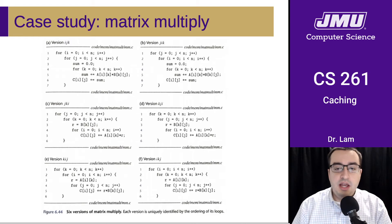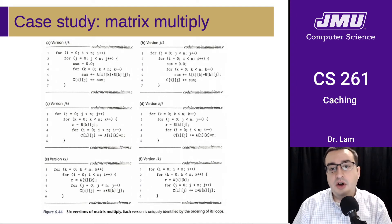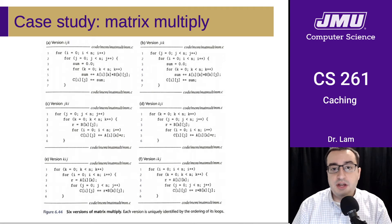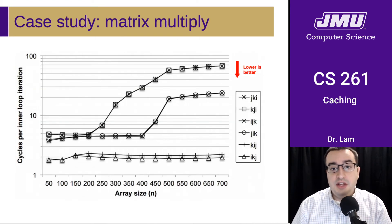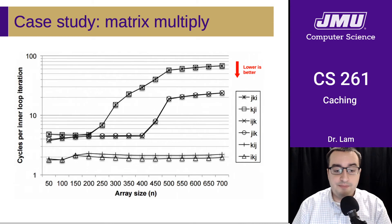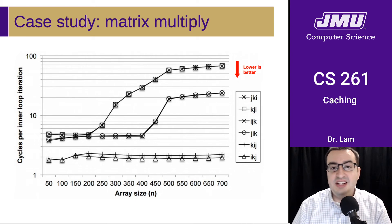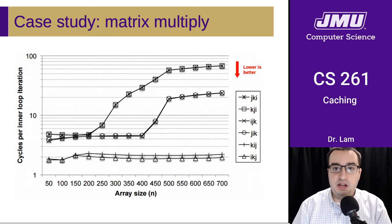The textbook walks through a case study showing six different versions of the same matrix multiply code. The specifics aren't important — they all produce the same result — but they have different access patterns on the data being manipulated. Because of the way caching impacts performance, these different implementations have significantly different performance characteristics. On the graph, lower is better, with a logarithmic axis showing cycles per inner loop iteration. Some implementations are significantly faster than others, which is why we need to be aware of these things — we could be leaving significant performance on the table if we don't optimize our programs to take advantage of the caching system.